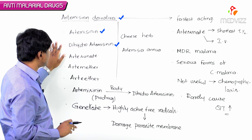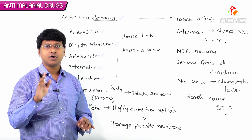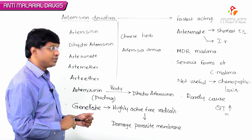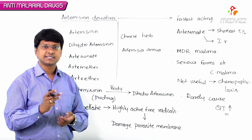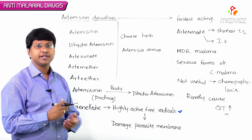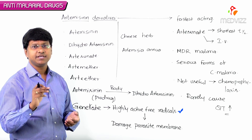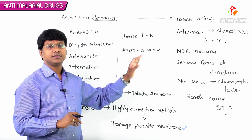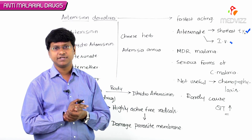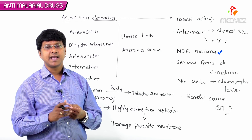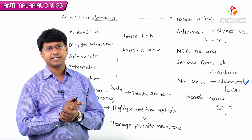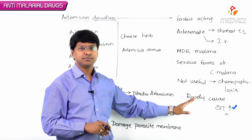To summarize: artemisinin derivatives include artemisinin, dihydroartemisinin, artesunate, artemether, and arteether — all derived from the Chinese herb Artemisia annua. Artemisinin is a prodrug converted to dihydroartemisinin in the body. These drugs generate free radicals that damage the parasite membrane and are the fastest-acting drugs against malaria. Artesunate has the shortest half-life and can be given intravenously. They are used for multi-drug resistant malaria and serious cerebral malaria, but are not indicated for chemoprophylaxis. Adverse effect: QT prolongation, though rare.